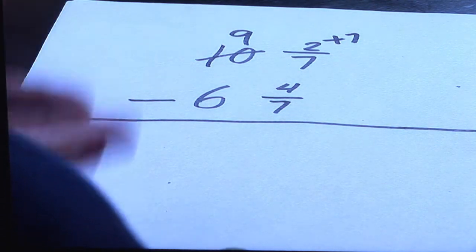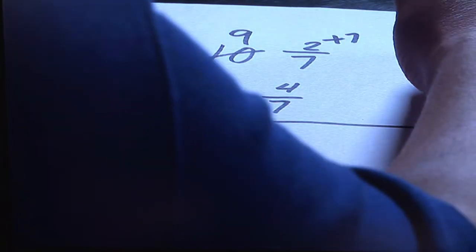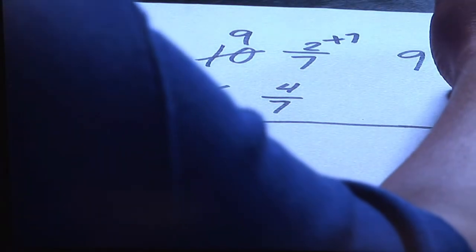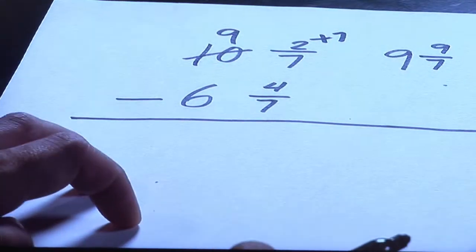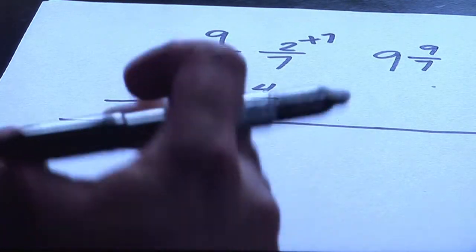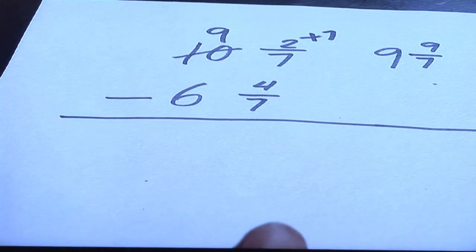So now, the ten and two sevenths become nine and our new numerator is nine over seven. It now has enough pieces to be able to subtract the second fraction.